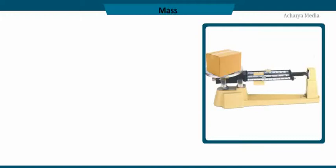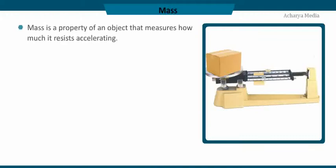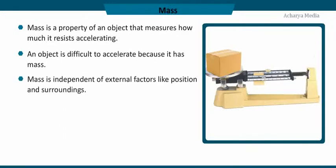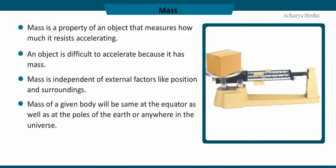Mass is the quantity of matter contained in a body. It is an inherent and fundamental property of the body. Mass is a property of an object that measures how much it resists accelerating — an object is difficult to accelerate because it has mass. Mass is independent of external factors like position and surroundings. The mass of a given body is the same at the equator, at the poles of the earth, or anywhere in the universe.